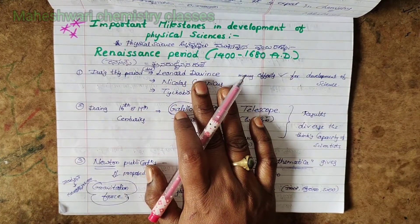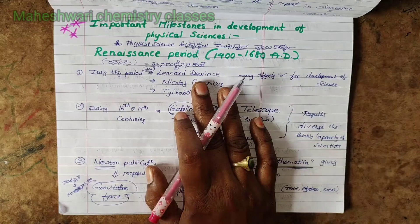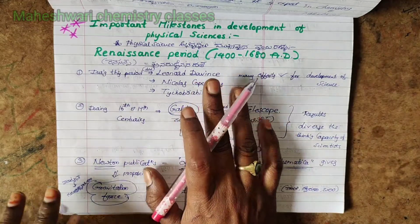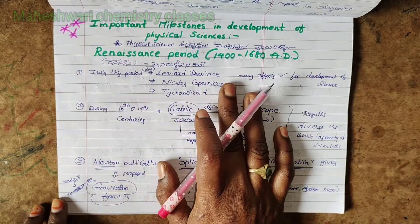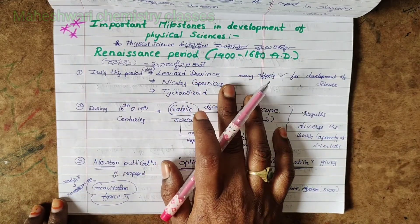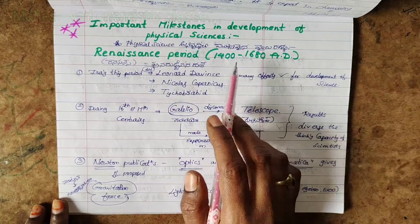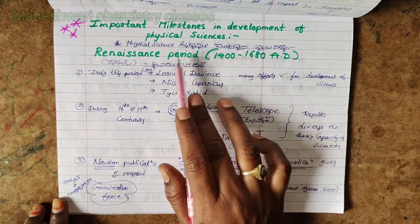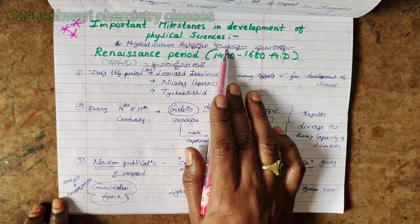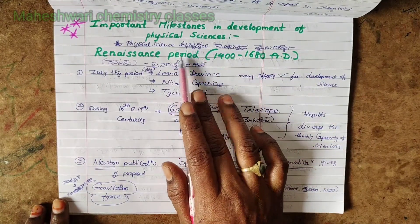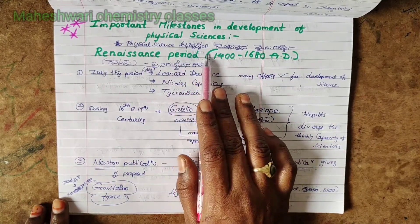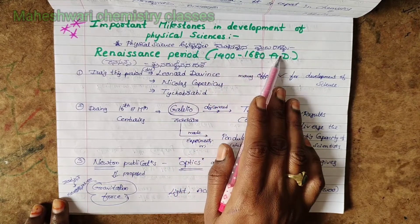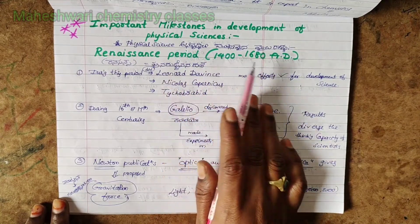Listen carefully. Physical Science Methodology, Class No. 7 and Class No. 8 — the topic of the 1st Unit: Important Milestones in Development of Physical Science.